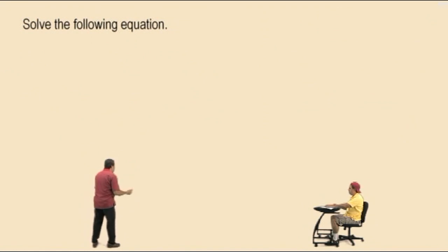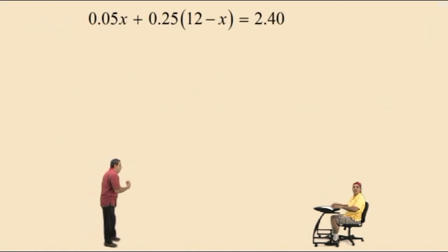Solve the following equation. Don't get scared. There it is right there. Now, notice this equation has decimals. Actually, this equation is from the applied problems that we're going to be doing very soon. This is specifically the coin problems. This represents the problem where you have nickels and quarters, and the whole pile of coins adds up to $2.40, and you have 12 coins altogether. So we're going to be doing these equations shortly, a couple sections down the road. Now, Charlie.